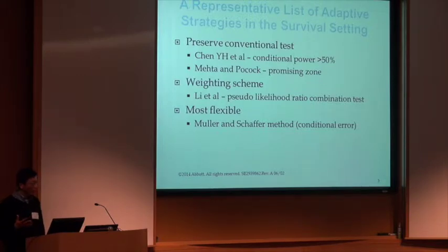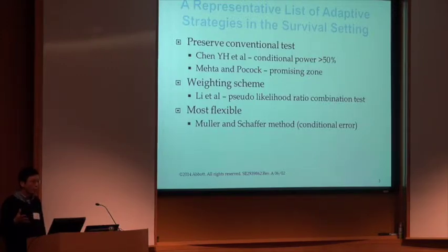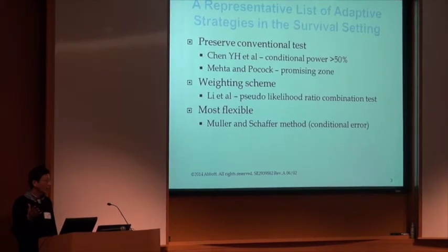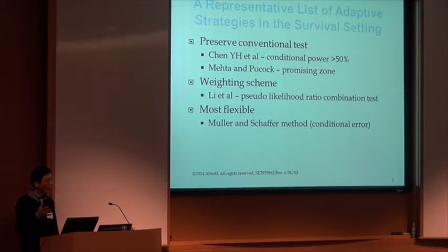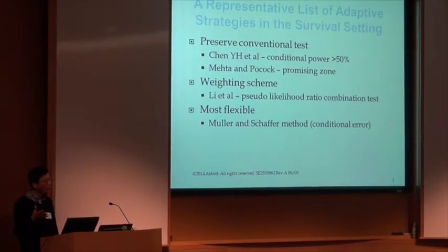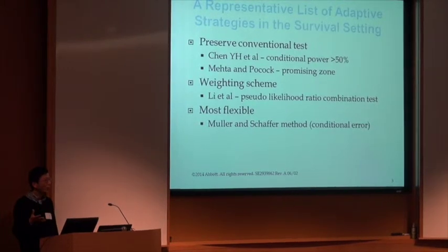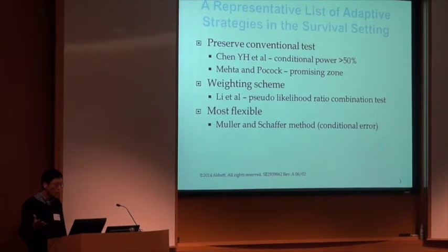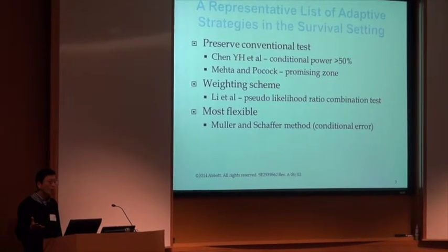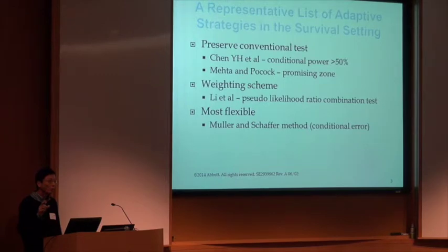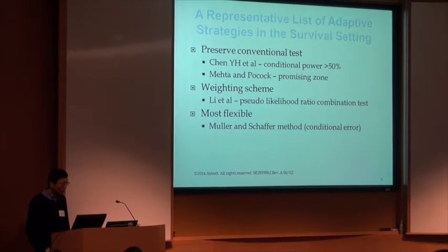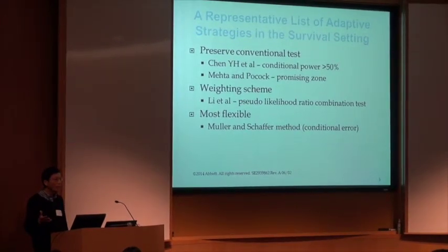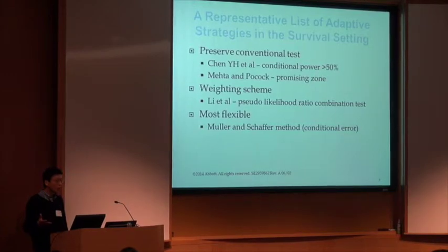Cyrus and Polka came up with some improvement. They questioned why exactly 50% is the critical threshold for conditional power, so they extended Chen's method to a more general permissive zone, while still maintaining that nice property of using the conventional test statistic.